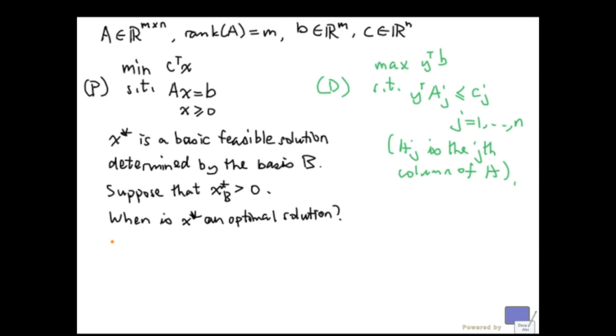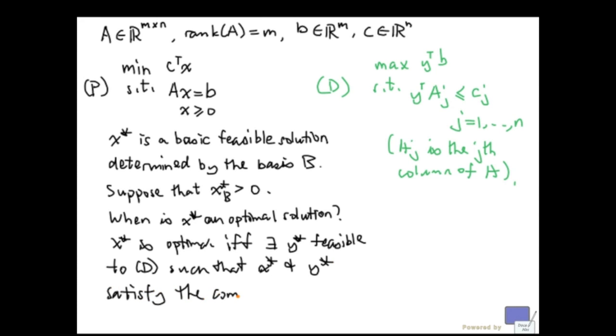So using complementary slackness, we know that x star is optimal if and only if there exists y star feasible to the dual such that x star and y star satisfy the complementary slackness conditions.